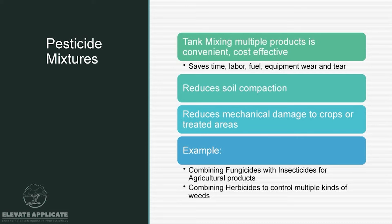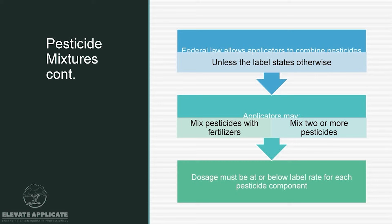Pesticide mixtures — tank mixing multiple products is convenient and cost-effective. You can save time, labor, fuel, equipment wear and tear, and reduce soil compaction and mechanical damage to crops by doing everything in one pass. Examples include combining fungicide and insecticide in an agricultural setting, or combining herbicides to control multiple weed species in a residential landscape. Federal law allows applicators to combine pesticides unless the label states otherwise. Applicators may mix pesticides with fertilizers or mix two or more pesticides, but the dosage must be at or below the label rate for each pesticide component.